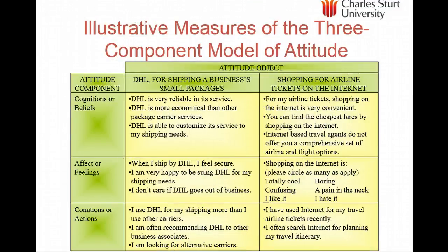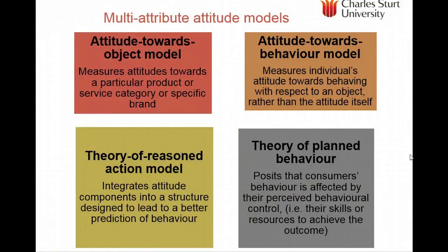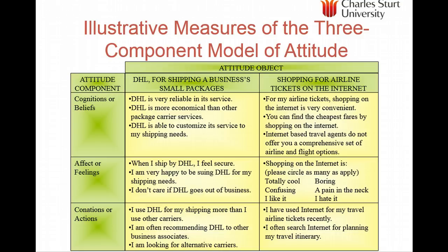With three components of an attitude, how do they influence choices and evaluations? Here we're looking at evaluating two objects: DHL providing small package delivery for businesses, or shopping for an airline on the internet. There are our beliefs — which can be somewhat correct or incorrect — our affect and feelings, and our conations or actions. These three things tend to be consistent. The attitude towards DHL consisted of its reliability, how economical it was, and its customisation.